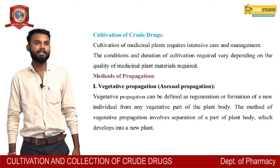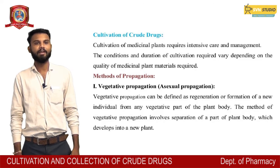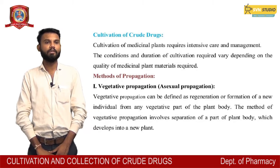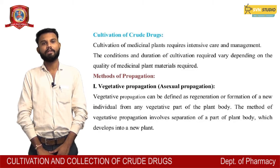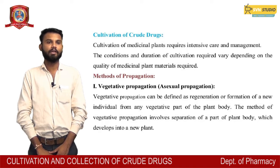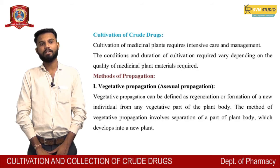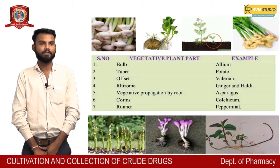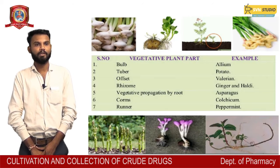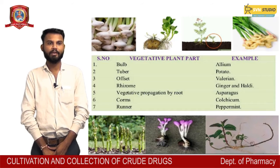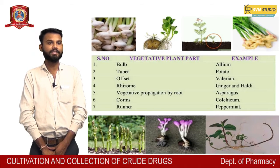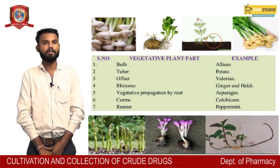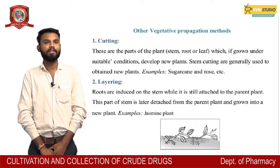Methods of propagation: Vegetative propagation can be defined as the regeneration or formation of a new individual from any vegetative part of the plant body. The method involves separation of a part of the plant body which develops into a new plant. Examples include: Bulb (Allium), Tuber, Offset, Valerian, Rhizomes (Ginger), Wild root (Asparagus), Corms (Colchicum), and Runner (Peppermint).